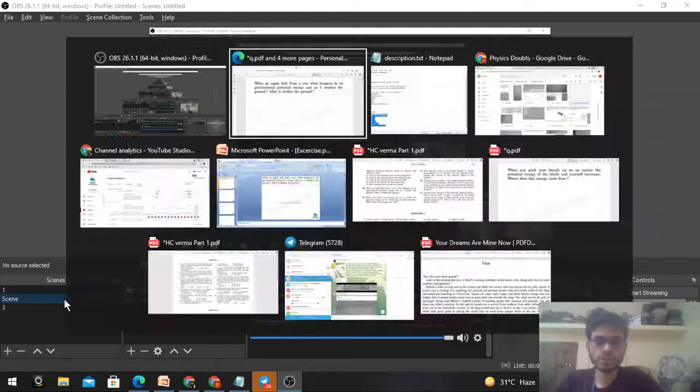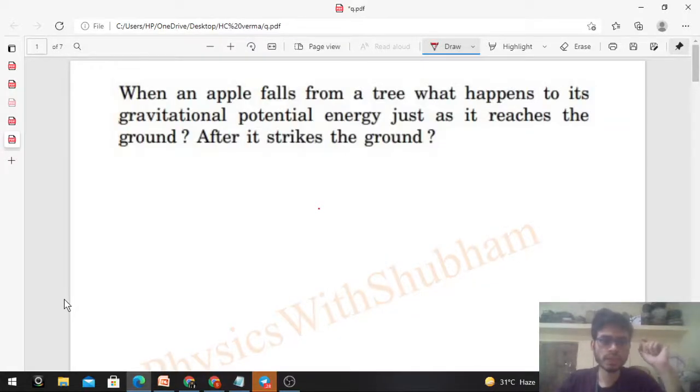Okay, hi everyone. So today let's discuss this problem. It says when an apple falls from a tree, what happens to its gravitational potential energy just as it reaches the ground and after it strikes the ground?